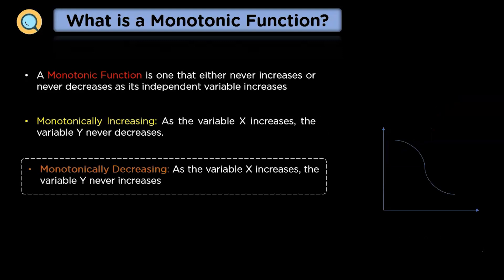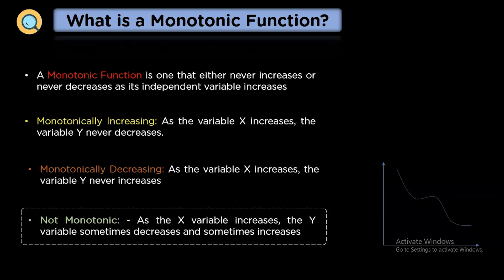Monotonically decreasing function: Here as the variable x increases, the variable y never increases. And the last one is non-monotonic. As the variable x increases, the y variable sometimes decreases or sometimes increases.